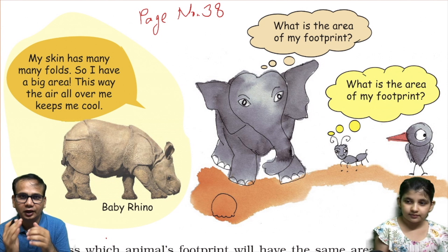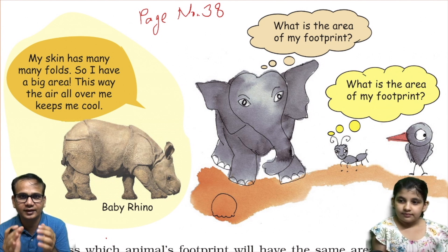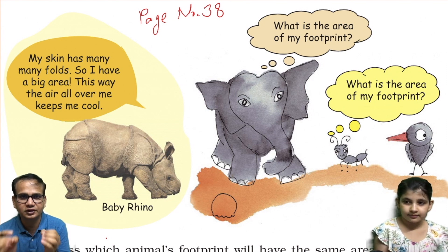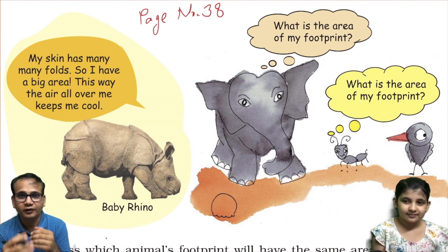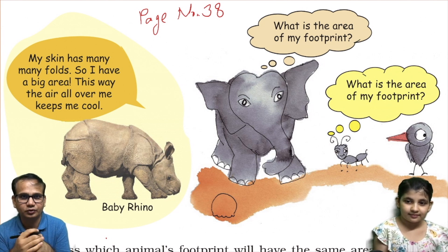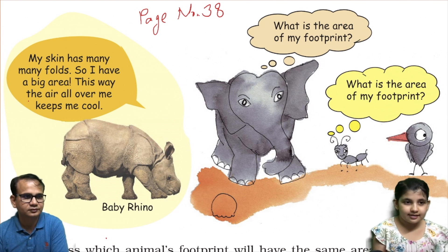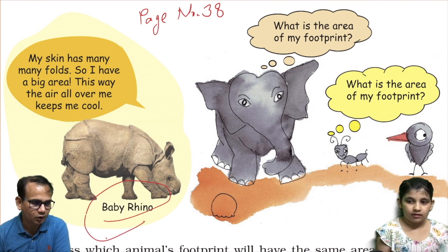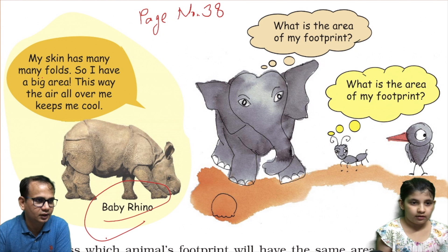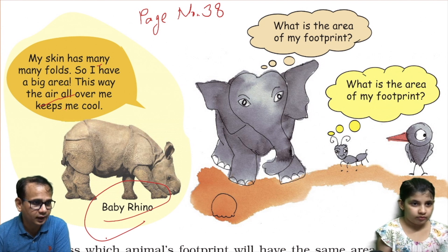Welcome back to the channel. Continuing from the previous video related to mathematics, chapter three of fifth standard NCERT book, today we'll be taking further pages. We'll be taking page number 38. So let's start. A baby rhino is telling: my skin has many many folds, so I have a big area. This way, the air all over me keeps me cool.